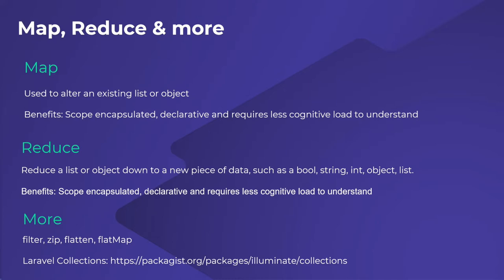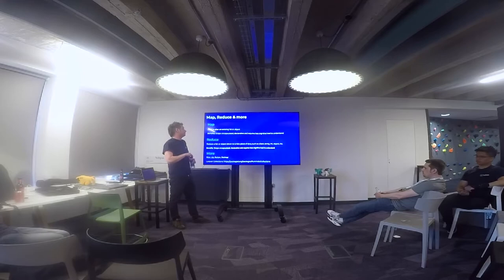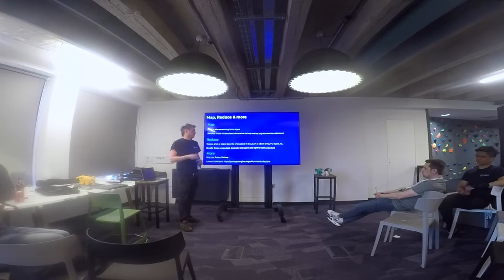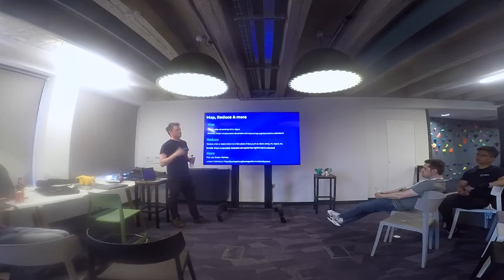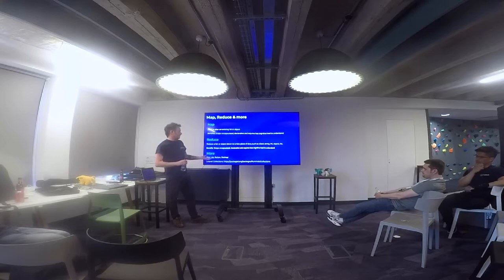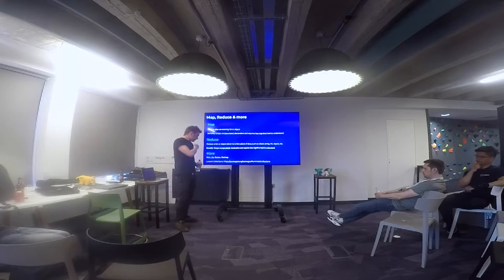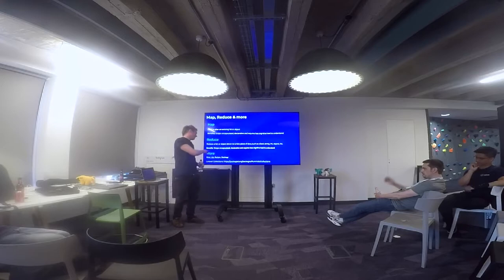We're going to look a bit at map, reduce, and flat map, and discuss some other functions you could use. With map and reduce, the benefits are the same: you've got encapsulation of scope, they're declarative, and that takes less cognitive load to understand every time you see it. Laravel collections has so many functions — filtering, zip, flat map — it's a brilliant tool.